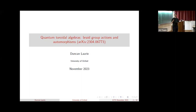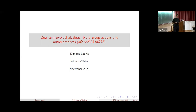Today I'm going to be speaking about quantum toroidal algebras. More specifically, I'll first introduce what these algebras actually are, then we'll construct an action of what's called the extended double affine braid group, and finally we'll use this to obtain certain interesting and useful automorphisms and anti-automorphisms of these algebras, which should have some applications to their representation theory. This is based on a paper I put up on the archive earlier this year.